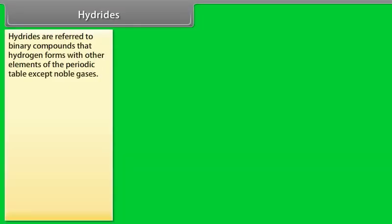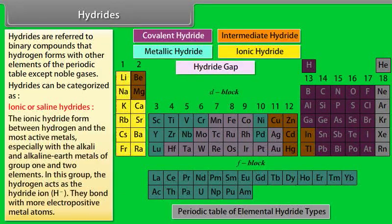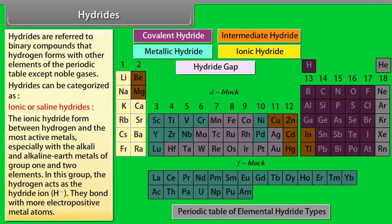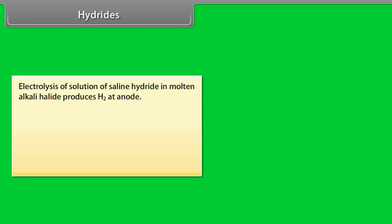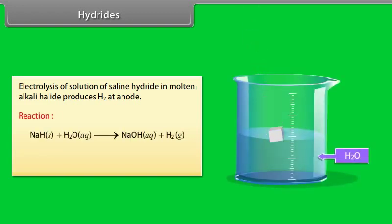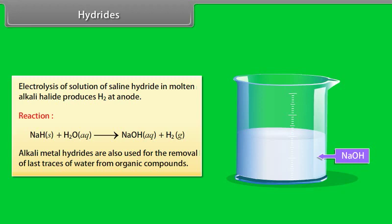Hydrides. Hydrides are referred to binary compounds that hydrogen forms with other elements of the periodic table except noble gases. Hydrides can be categorized as ionic or saline hydrides. The ionic hydride form between hydrogen and the most active metals, especially with the alkali and alkaline earth metals of group 1 and 2 elements. In this group, the hydrogen acts as the hydride ion. They bond with more electropositive metal atoms. Electrolysis of solution of saline hydride in molten alkali halide produces H2 at anode. Alkali metal hydrides are also used for the removal of last traces of water from organic compounds.